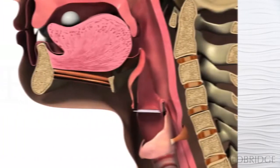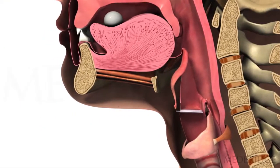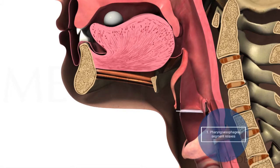To summarize how the upper esophageal sphincter opens, there are two main things that have to happen. The first, focusing on number one in this slide, is that the whole pharyngoesophageal segment has to relax.